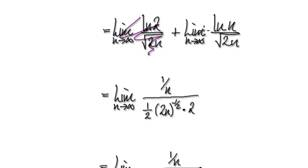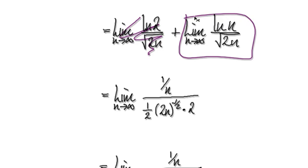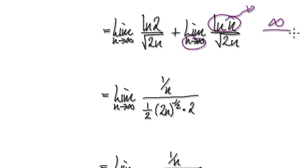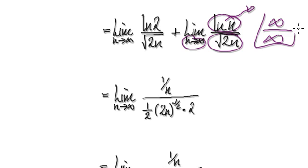We can pretty much forget about this and concentrate on this. As n tends to infinity, natural log of n will just get bigger and bigger — heading towards infinity. This is also heading towards infinity, so here you've got an indeterminate form, which means you can apply L'Hôpital's rule.